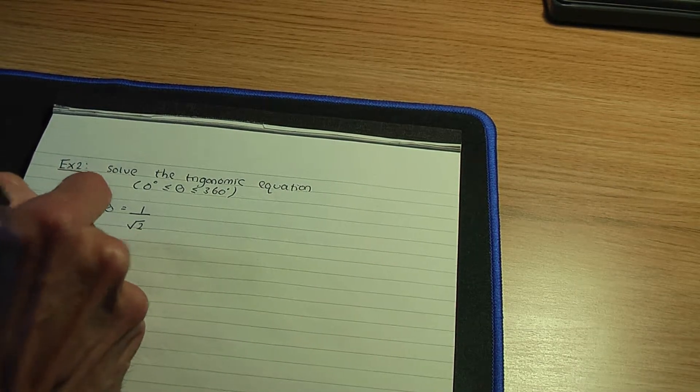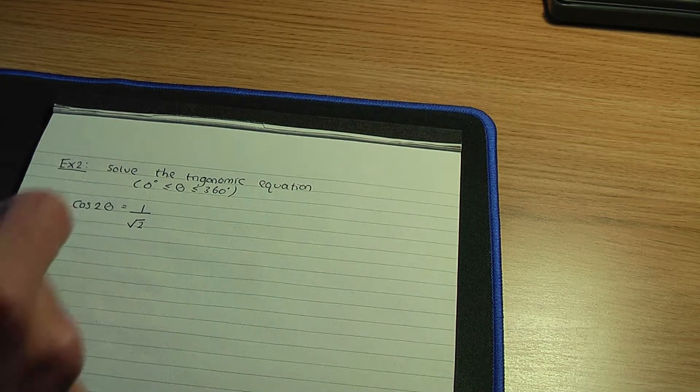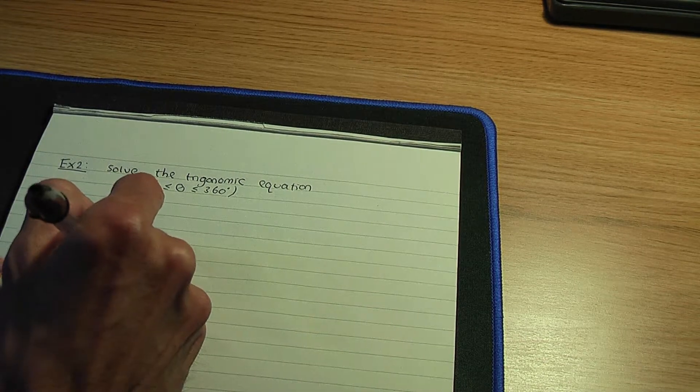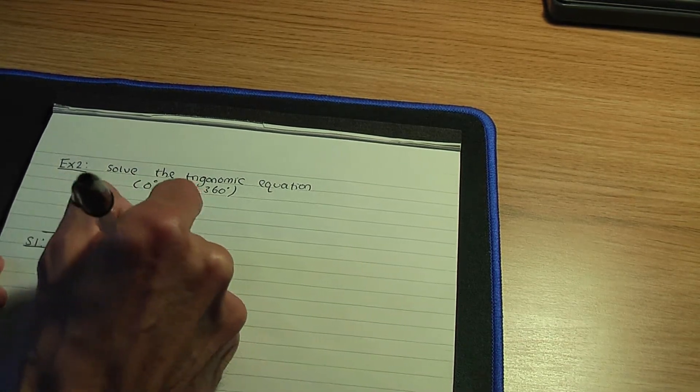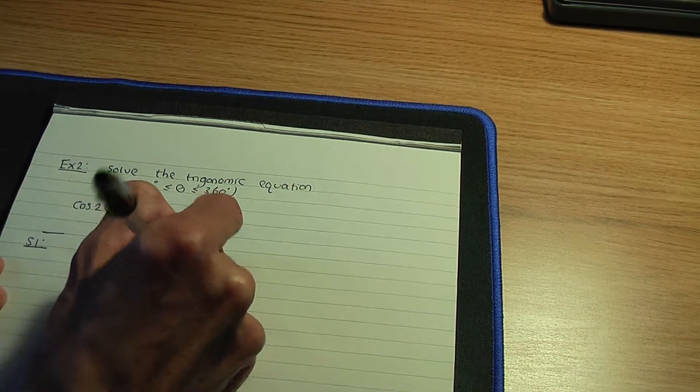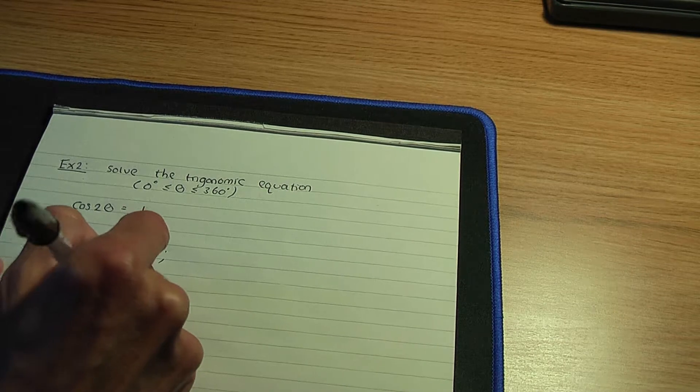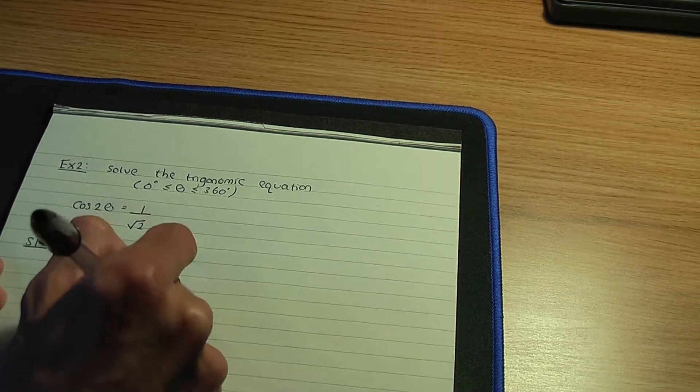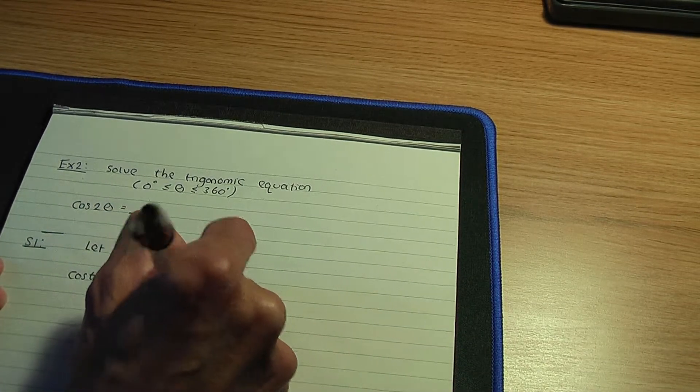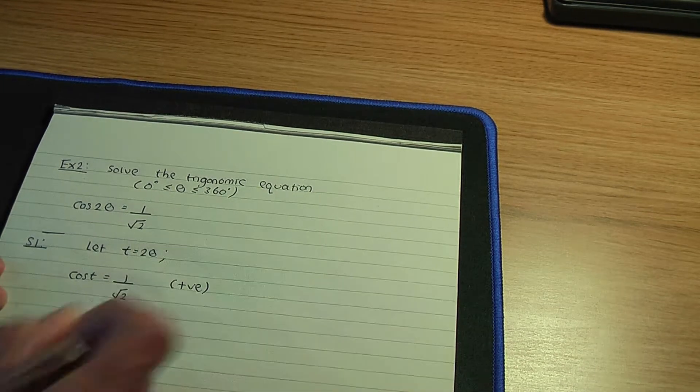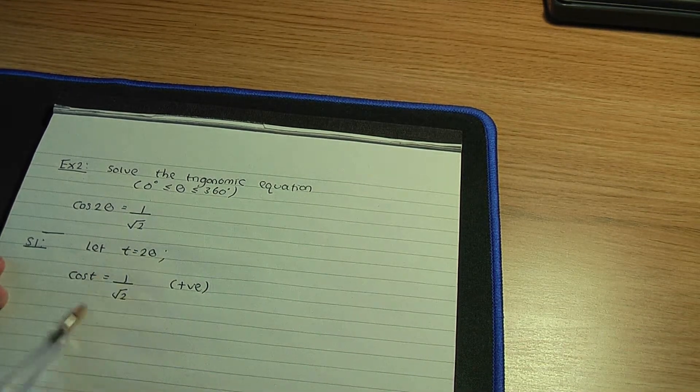The method is the same as before, but in step number 1, let me let t = 2θ. My equation becomes cos t = 1/√2. Let me make a note that the 1/√2 is positive.